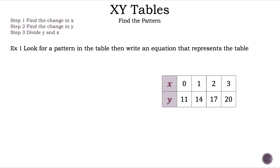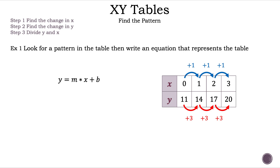Let's look at the table. What patterns do we see? Well, if you count the change in X after each new value, it is plus 1. And if you count the change in Y after each new value, it is plus 3. Let's write down the slope-intercept formula for a linear equation,